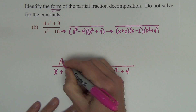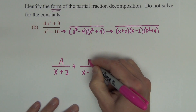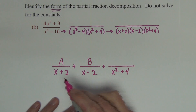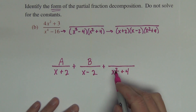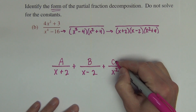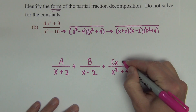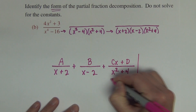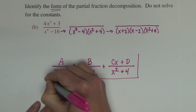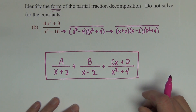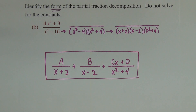The linear factors just get single numerical constants. The quadratic factor gets a linear numerator — we'll use Cx plus D. There is the form, again without actually solving for the constants.